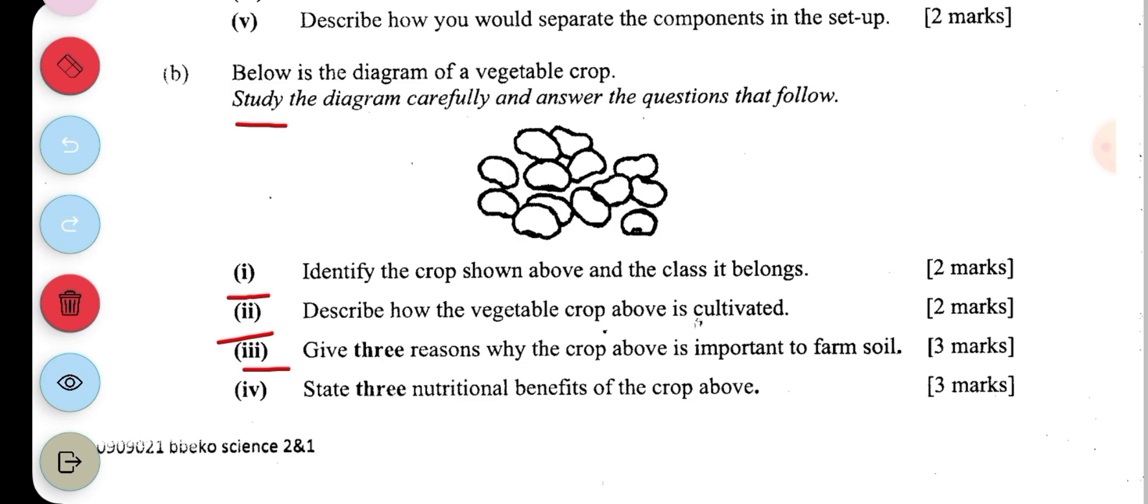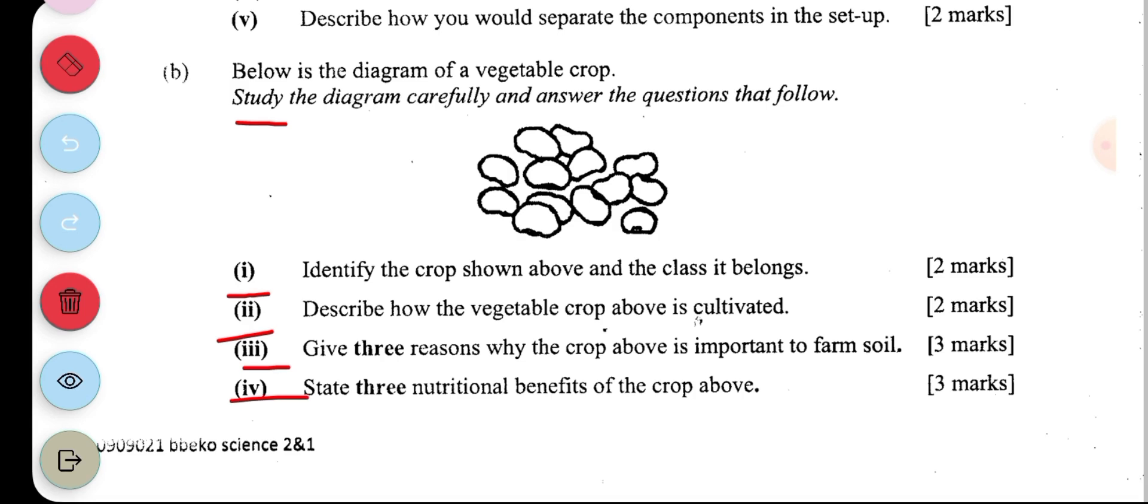And it also helps to retain soil water content. What are three nutritional benefits of the crop above? Cow pea gives protein. It also has fiber. It also has iron and then magnesium.